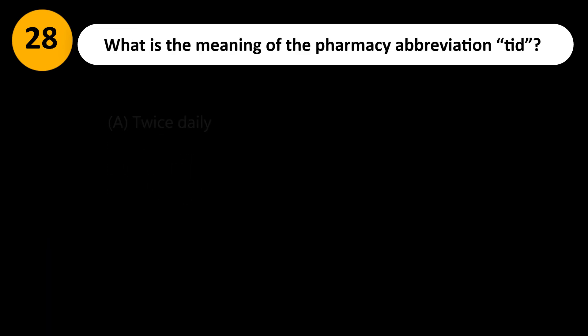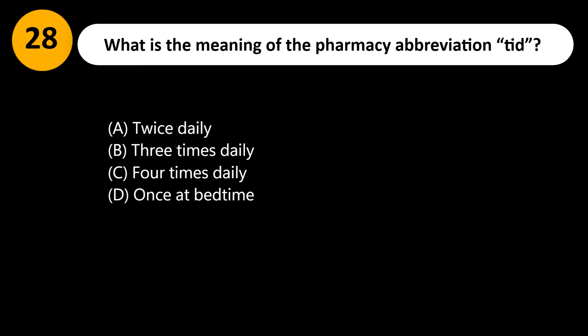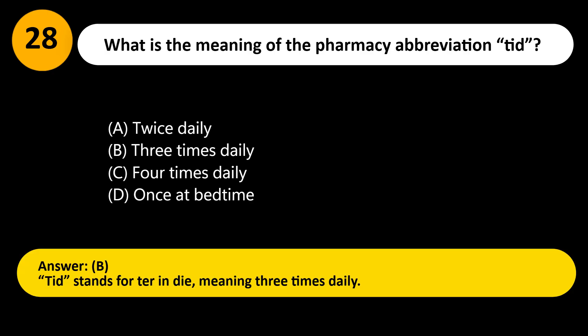What is the meaning of the pharmacy abbreviation TID? A. Twice daily. B. Three times daily. C. Four times daily. D. Once at bedtime. Answer: B. TID stands for 'ter in die,' meaning three times daily.